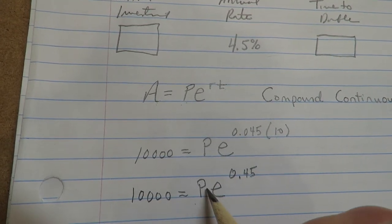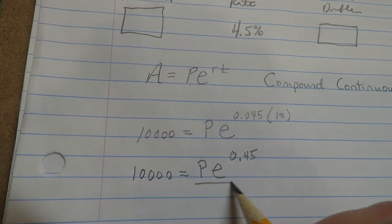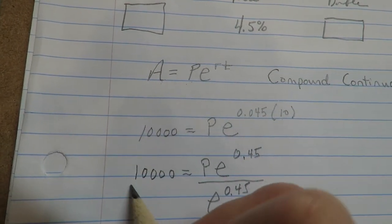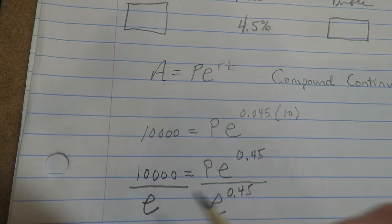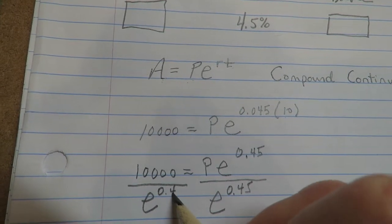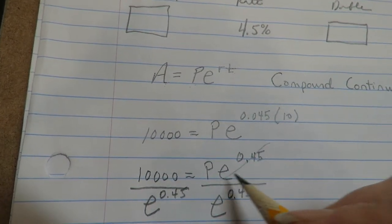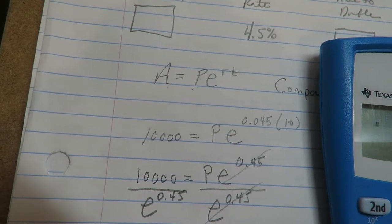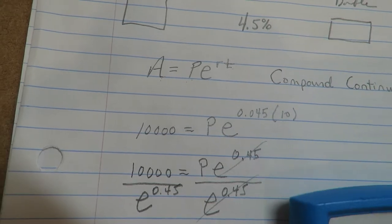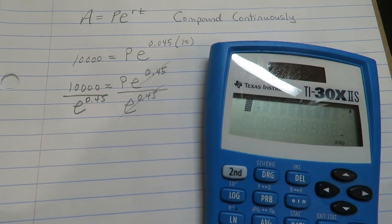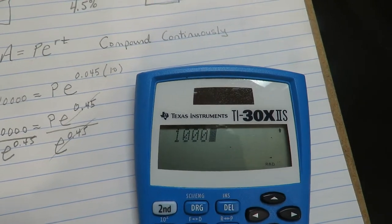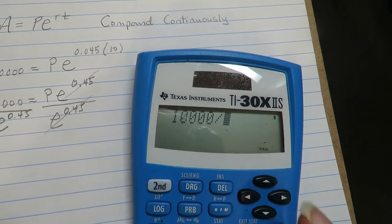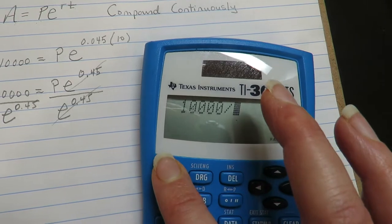All right, now I'm solving for P, so I want to divide this off. All right, so let's see here, we're going to do $10,000 divided by...